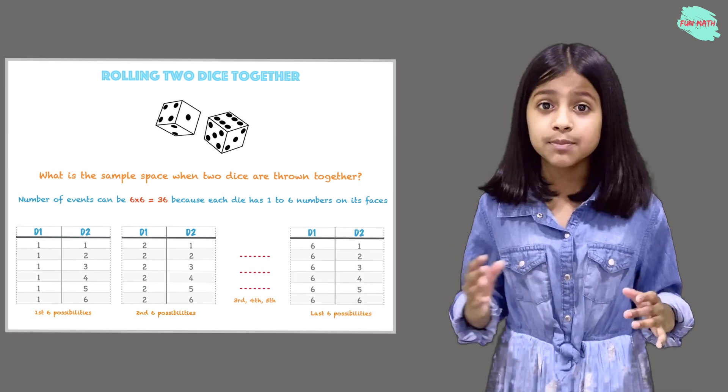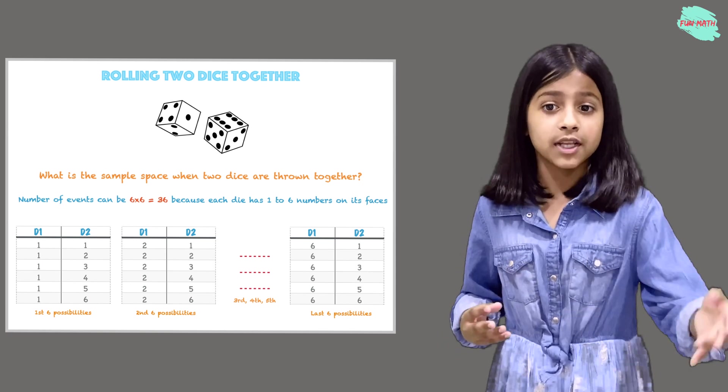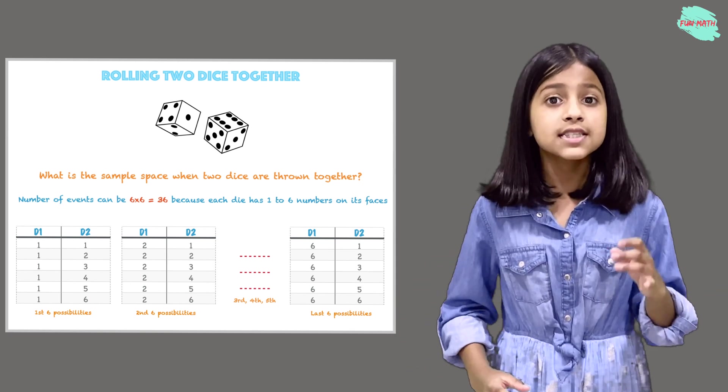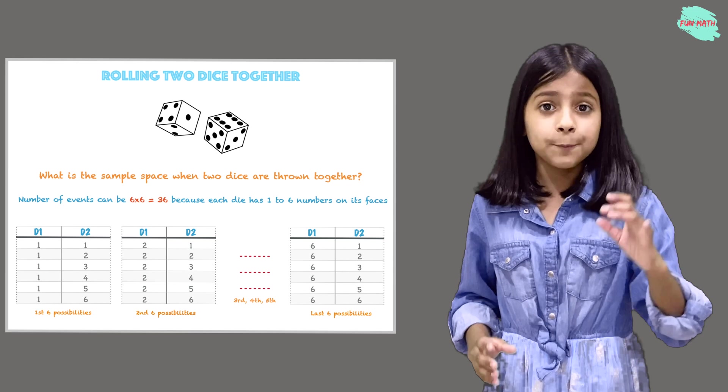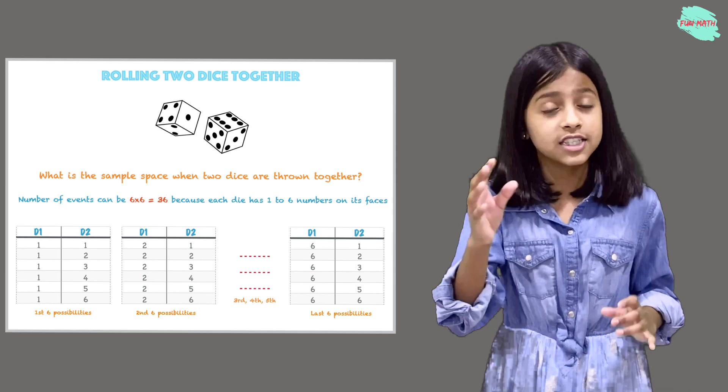And the last 6 possibilities when we roll d1 and d2, we will get 6 for d1 and 1 through 6 on d2.